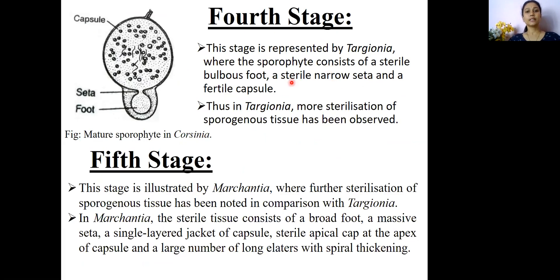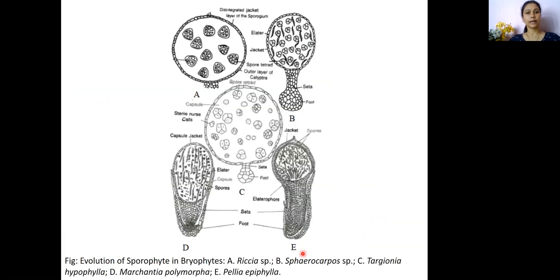The fifth stage can be seen in the genus Marchantia. In Marchantia, we can see a broad foot, a massive seta, a capsule layer with a single-layered jacket, sterile apical capsule cells, and elaters with spiral thickenings. All these represent the sterile tissues present in the sporophyte of Marchantia.